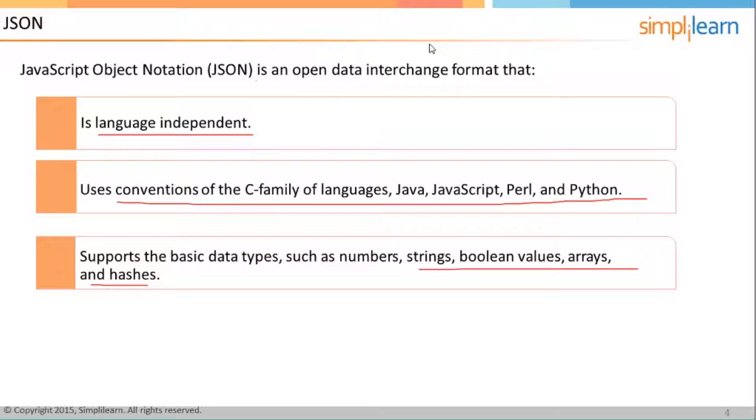So some are asking what is an open data interchange format? It means this is a format which can openly interchange between each other. What I want to say with that is that JSON is not actually dependent on any other languages and is open source.